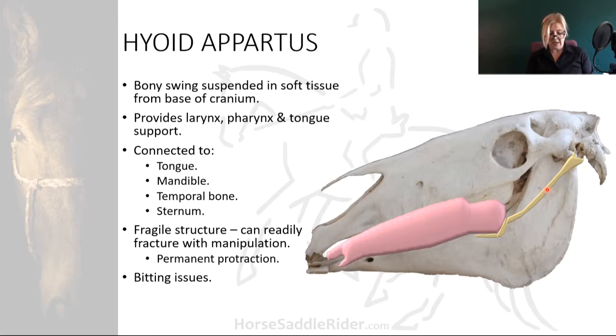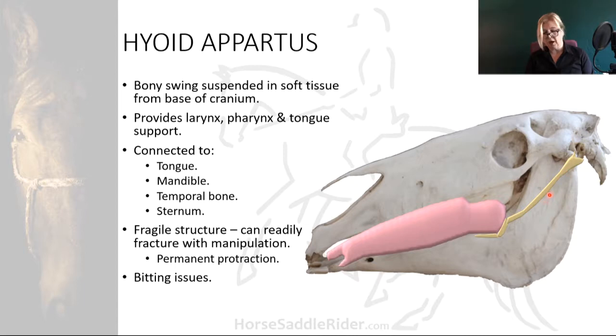The tongue may be permanently protracted as it is not possible to stabilize this structure for repair.